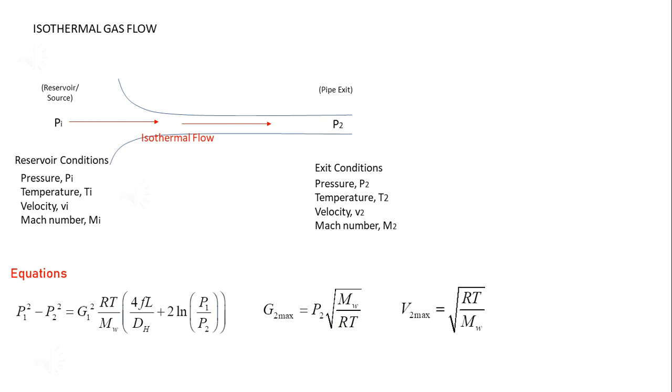And a corresponding maximum exit velocity V2 max, and so the exit Mach number will be already defined as equals to 1 over square root of gas ratio.